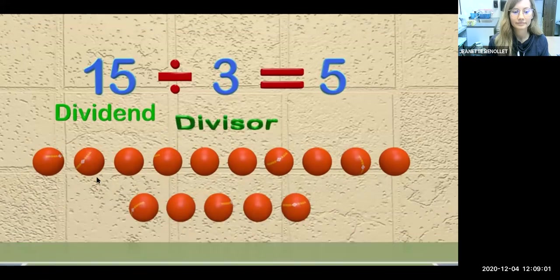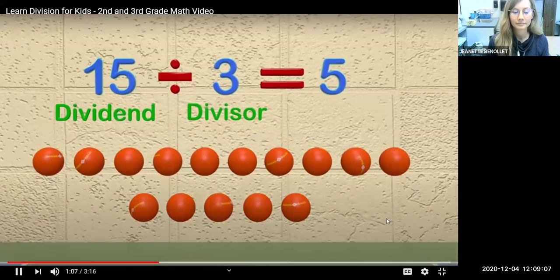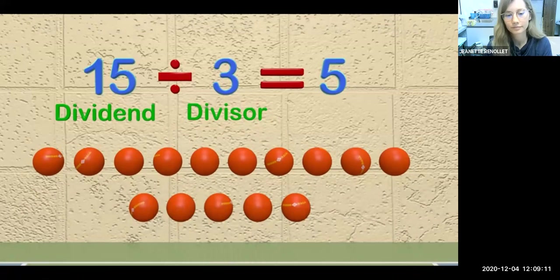The number three in the problem is called the divisor. This is the number we are dividing by. The divisor takes the dividend and breaks it into smaller groups. In this problem, let's say we have three kids that want to share the 15 balls. The three in the problem is the divisor.